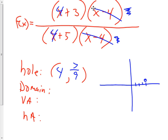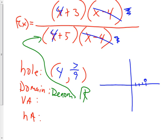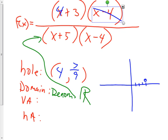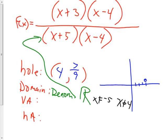Next thing: the domain. The domain comes from the denominator. All real numbers — that's always how you start — all real numbers except what would crash my function. If you had put in a negative 5, what would happen? So this is all real numbers except x cannot be negative 5 and x cannot be 4. Those two things are either asymptotes or holes — one or the other. Because the point is it won't work in the function, so when you put it in, it either creates an asymptote or creates a hole.